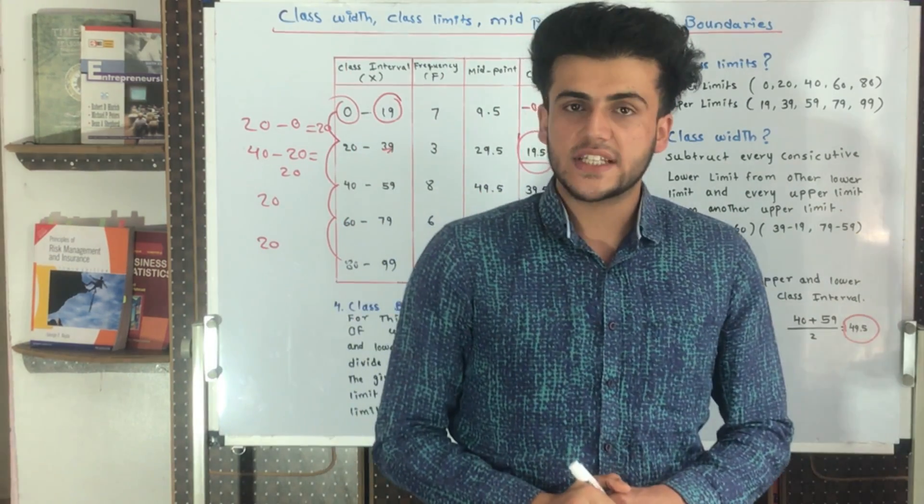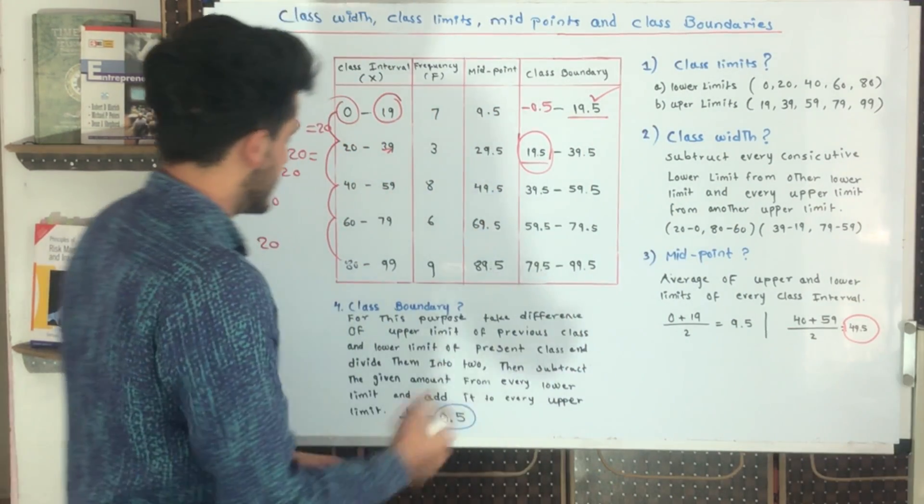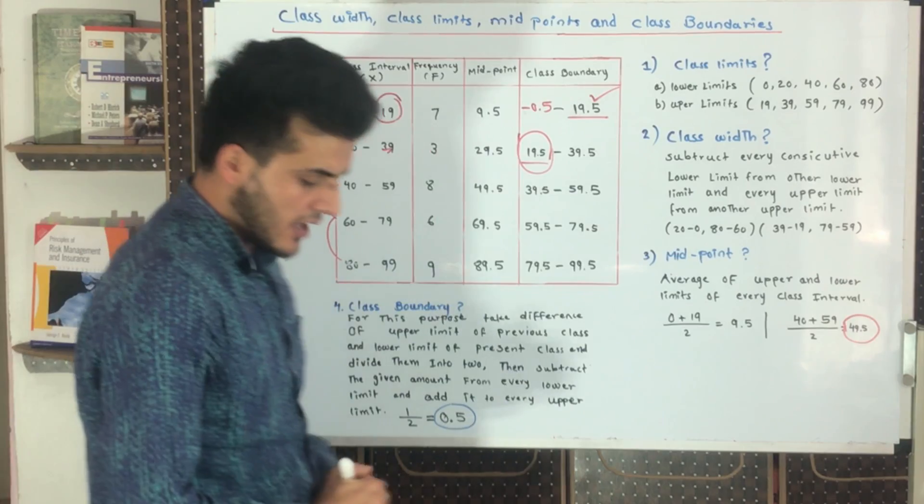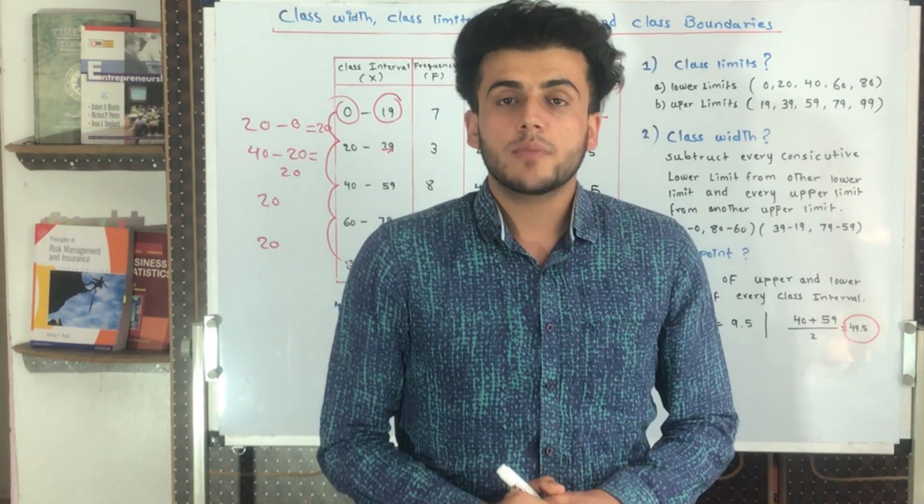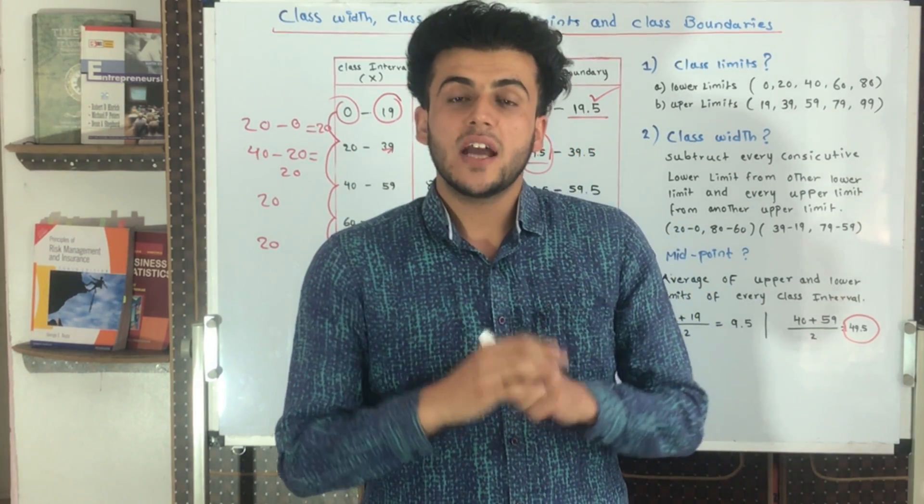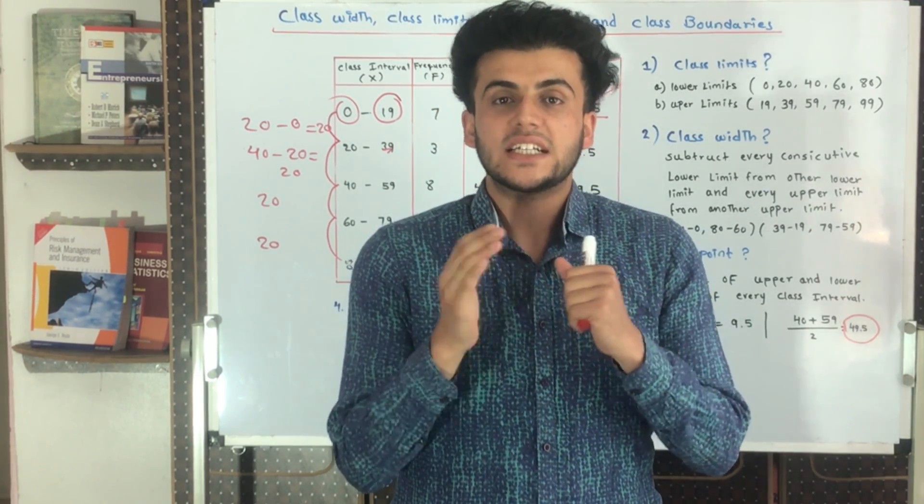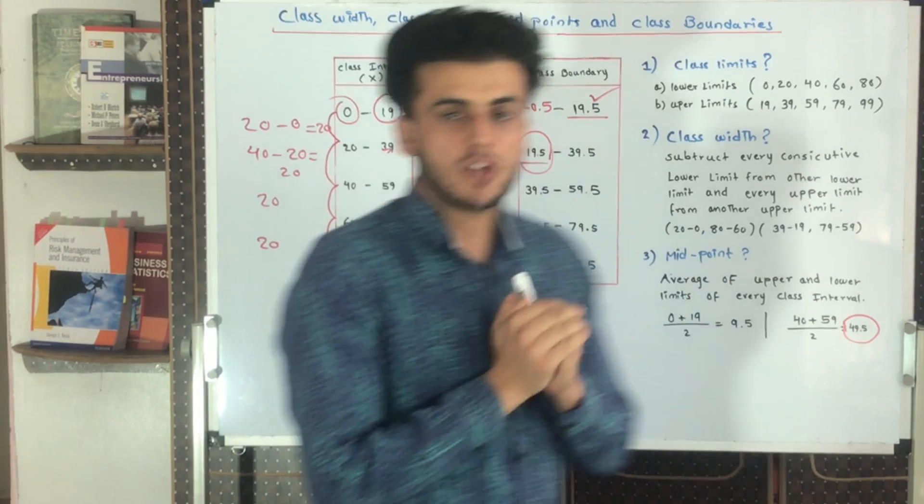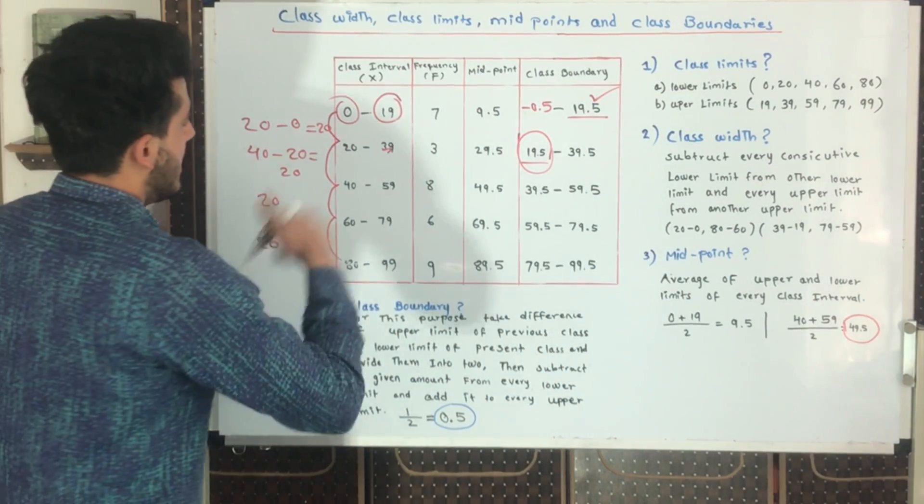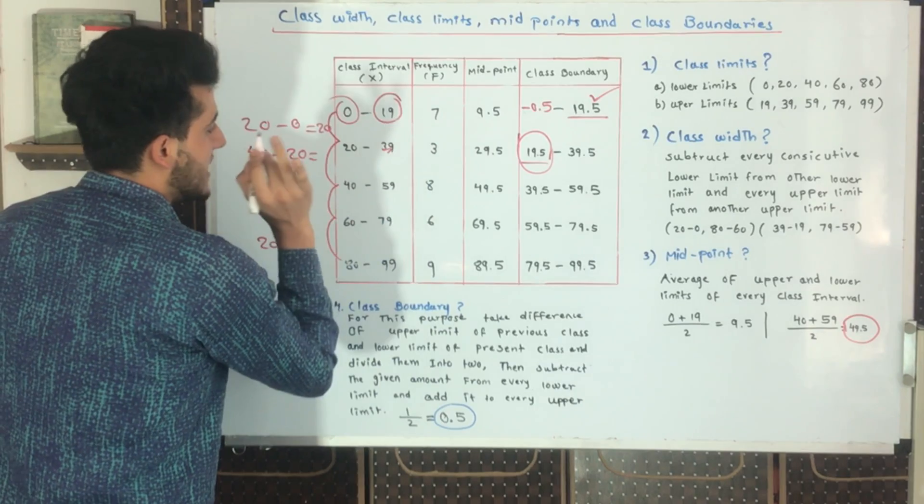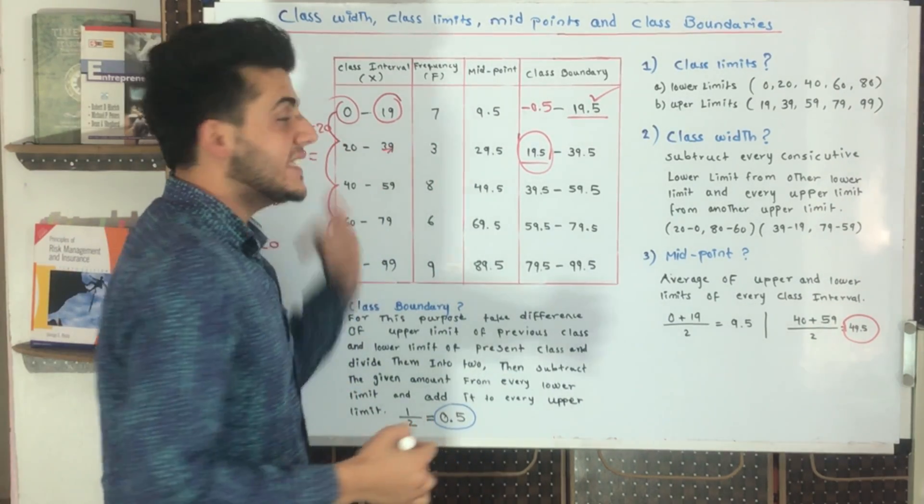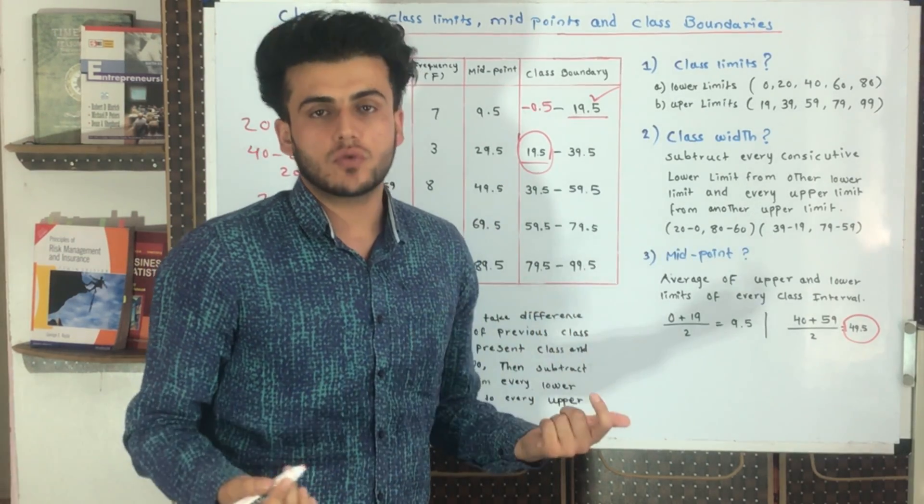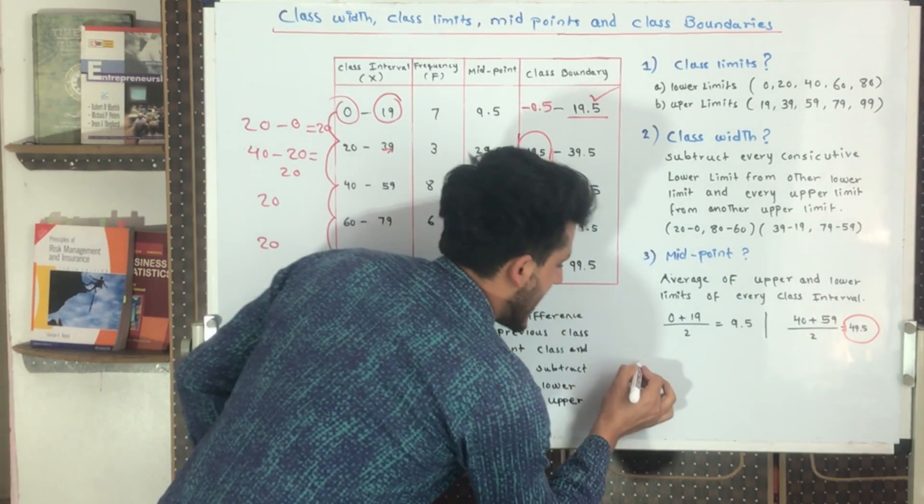The last point is class boundary. Why do we need class boundaries? Why is it so important? Because class boundary makes the borders attached to each other. For example, we have 0 to 19, then 20 to 39. If a number is coming between 19 and 20, where do we include it? Suppose we have 19.5 - this 19.5 should be included in this class interval, but we cannot include it.